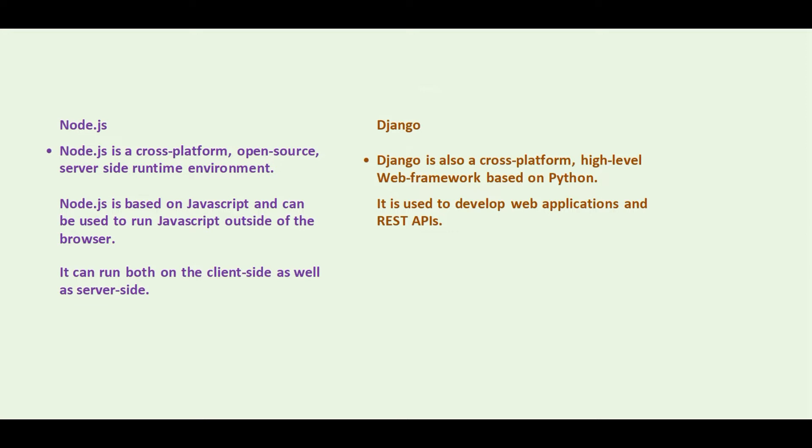On the other hand, Django is a cross-platform high-level web framework based on Python. It is used to develop web applications and REST APIs.